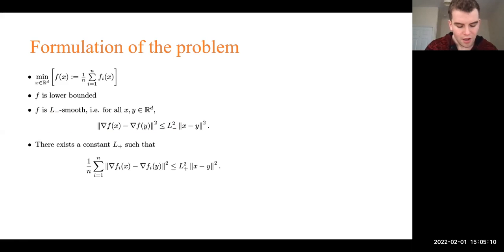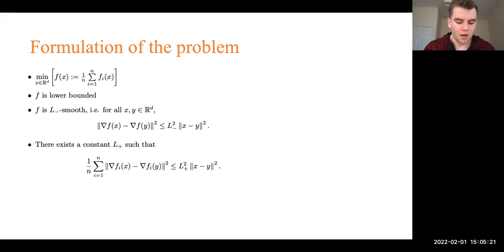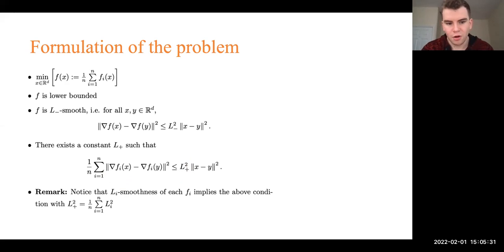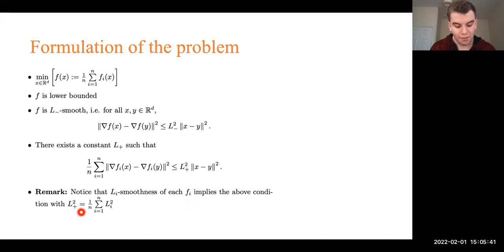There is a less standard assumption we make in the paper: the second moment of the smoothness terms is upper bounded by L-plus squared times the norm of x minus y squared. This is not standard in optimization papers, but an attentive listener will notice that if each f_i is L_i-smooth, this assumption holds with L-plus equal to one over n times the sum of L_i squared. So this assumption is actually weaker than individual smoothness.